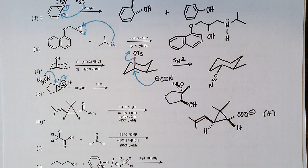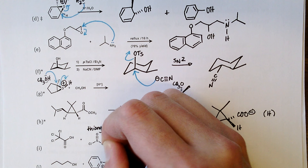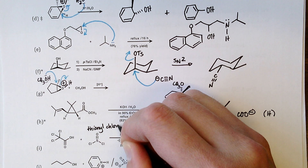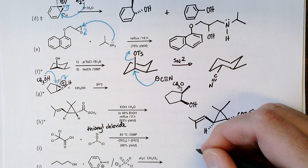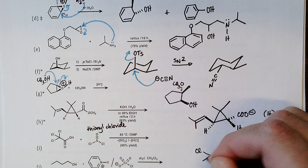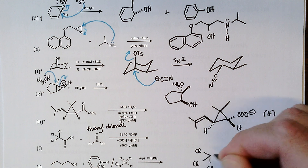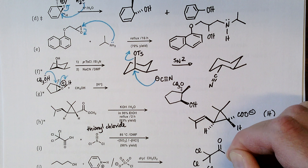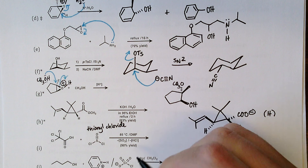Part i: trichloroacetic acid plus thionyl chloride. Thionyl chloride converts carboxylic acids into the corresponding acid chloride, so the product is trichloroacetyl chloride.